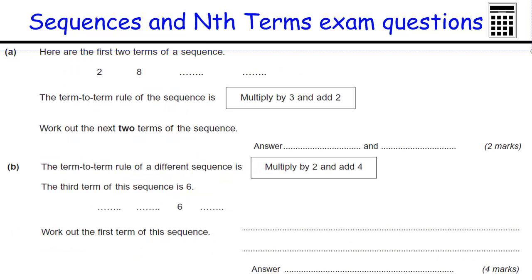Another question. The first two terms are two and eight. We've got a rule to continue the sequence, which is multiply by three and add two. This is called the term-to-term rule. I'm moving from one term to the other, I'm multiplying by three. Two times three is six, and then I'm adding two to get eight. Eight times three is 24, add two is 26. Twenty-six times three is 78 plus two is 80. So the next two terms of the sequence are 26 and 80.